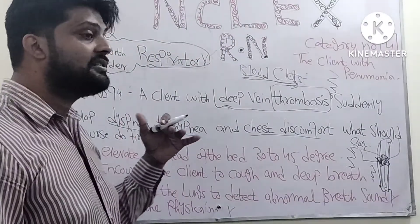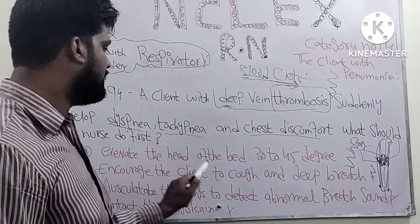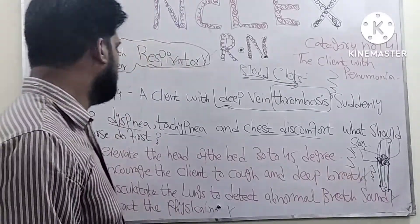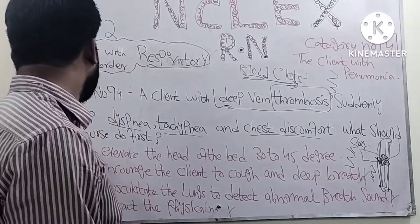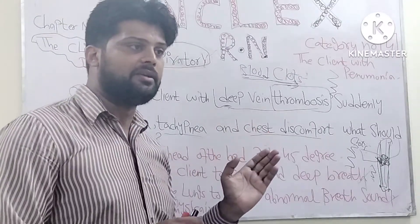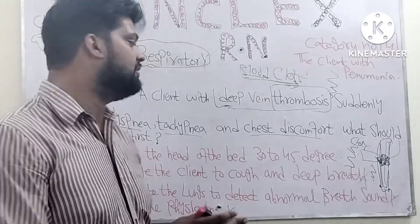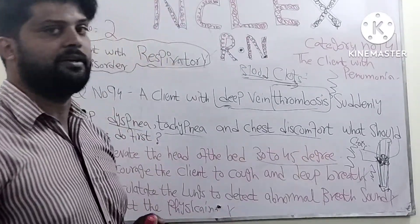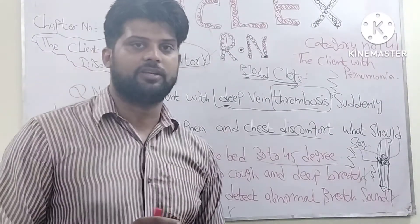We have to find the first priority from these options. Encouraging the client to cough and deep breathe — no. Elevating the head of the bed 30 to 40 degrees — yes, this is the right answer. When you elevate the head of the bed, the discomfort can be decreased and the patient can breathe easily. So you have to raise the level of the bed — this is the right answer. The next question is linked with this video. Thank you very much.